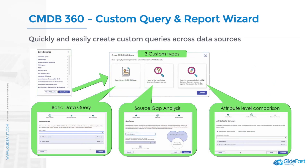The Utah release includes a new wizard that allows you to easily create and schedule custom queries across all of your data sources. There are three types of queries that you can configure to your attributes. The first is a basic data query, which you can create to explore your CMDB 360 data. It queries your CMDB 360 for CIs matching your criteria that are reported by specific discovery sources.